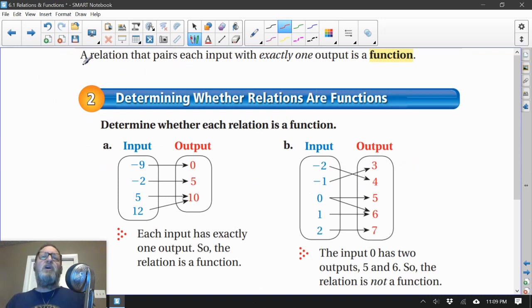A relation that pairs each input with exactly one output is called a function. So are these relations? We have two relations here. They're both relations—we have inputs, and they go with outputs. But is each relation a function?